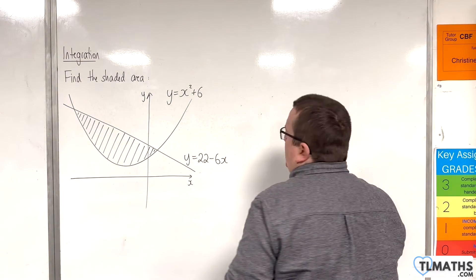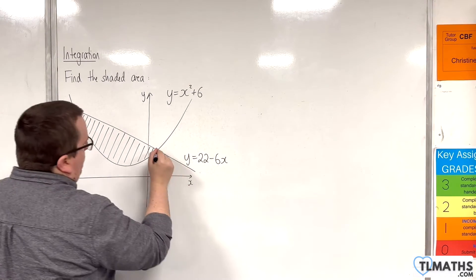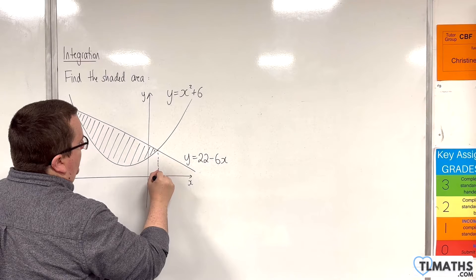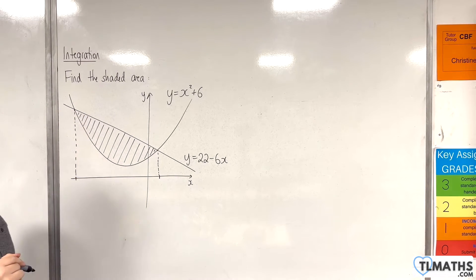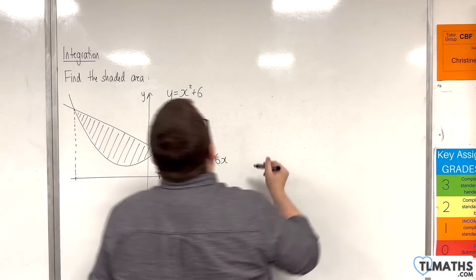Okay, so the first thing that we need to do is to work out where those two graphs intersect. So, we need these two values, otherwise we can't really progress. So, we're going to put one equal to the other.